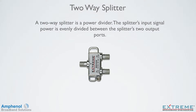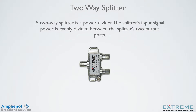A two-way splitter is considered a power divider. The splitter's input signal is evenly divided between the splitter's two output ports. So if a splitter divides the signal equally, why would we inject, say, a 40 dBmV signal into the input? Don't we have 20 dBmV, or half the input signal, on both the output ports instead of the 37 dBmV that we're showing here?